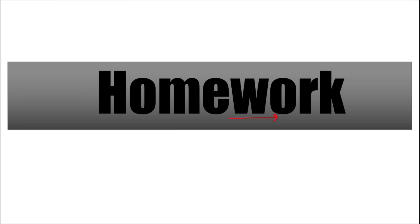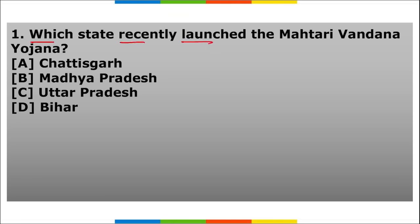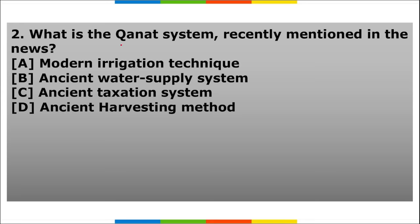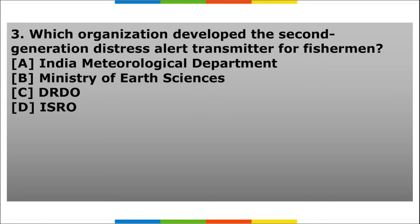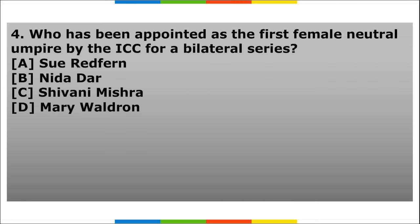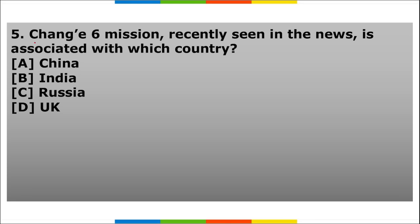Homework section — five questions: First, which state recently launched the Mahtari Vandana Yojana? Second, what is the Qanat system, recently mentioned in news? Third, which organization developed the second-generation distress alert transmitter for fishermen? Fourth, who has been appointed as the first female neutral umpire by ICC for a bilateral series? Fifth, the Genghis VI mission recently seen in news is associated with which country?